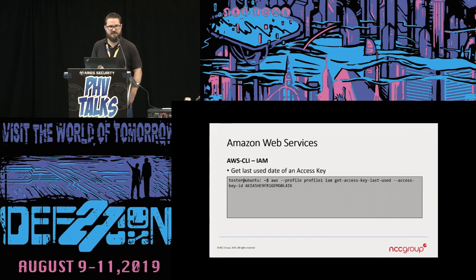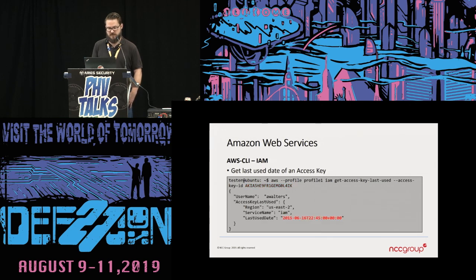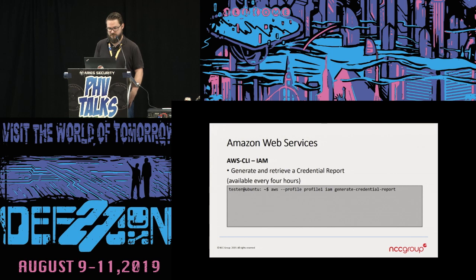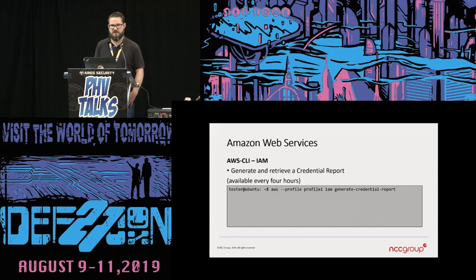The last time this access key was used — when did the user actually use the API? We take that access key, plug it into this command, and get some output. We see the last time it was used was June 16th, 2015 — this account hasn't been used in over four years. Probably a good thing to audit. Another option is to generate a credential report, which gives you multiple access keys and other info like last login. You can generate these every four hours.